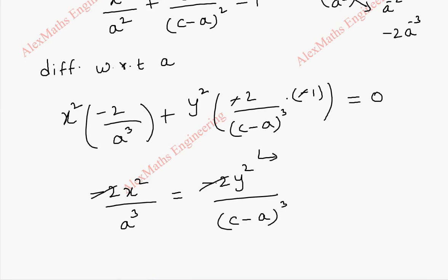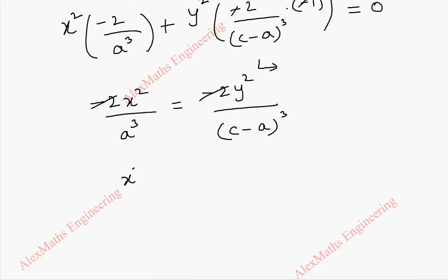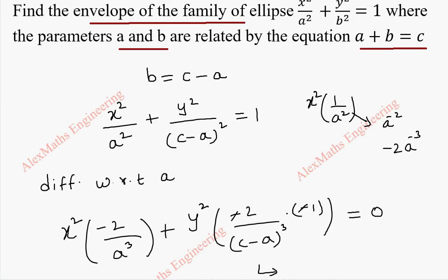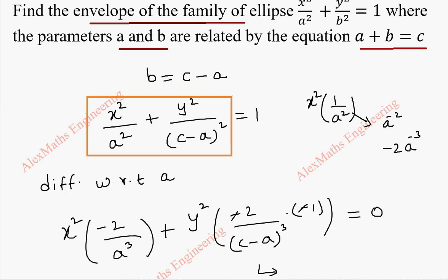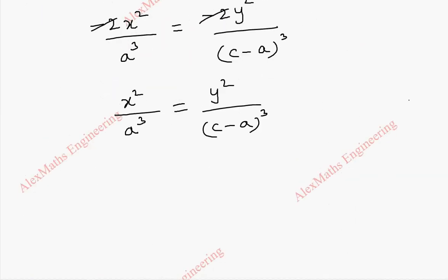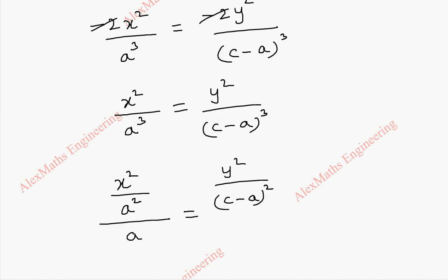We can cancel −2 on both sides, leaving x²/a³ = y²/(c−a)³. We need to rearrange this so we get x²/a² and y²/(c−a)² forms so that we can replace them with 1. So x²/a³ is written as (x²/a²) / a, and similarly y²/(c−a)³ is written as (y²/(c−a)²) / (c−a).